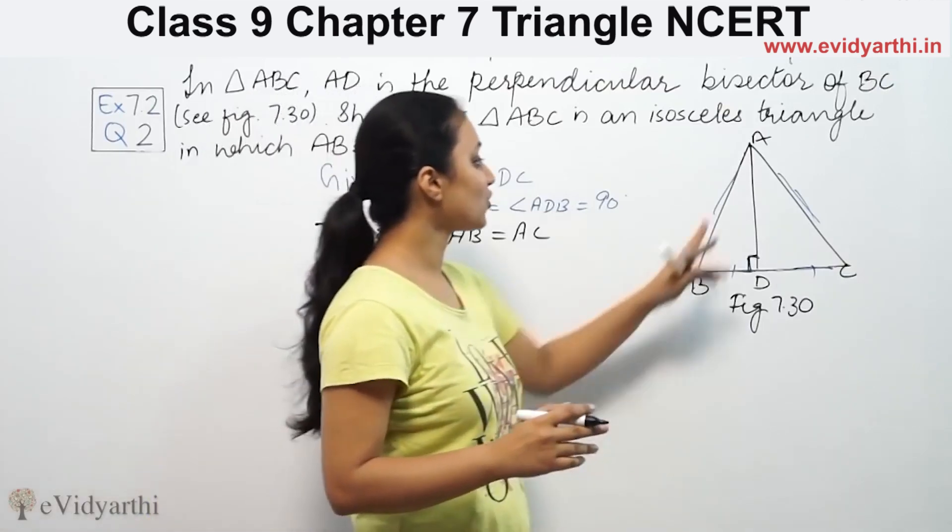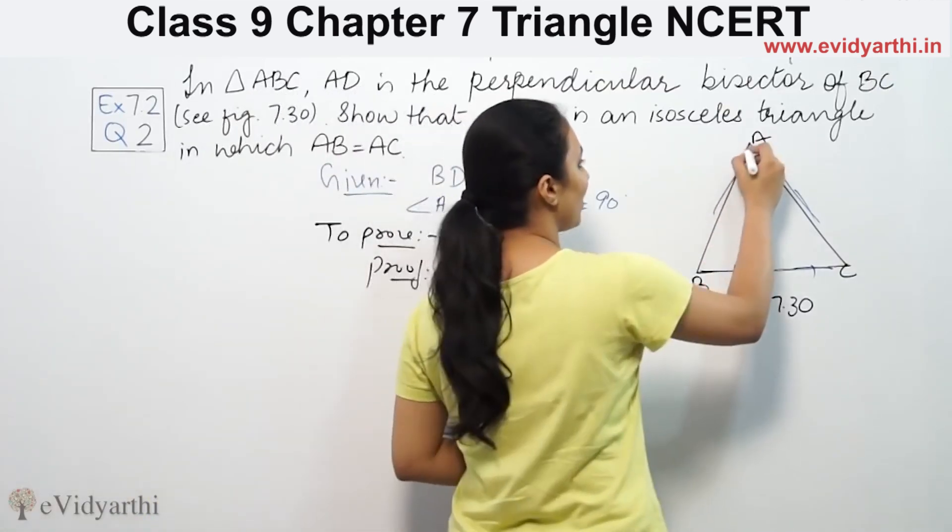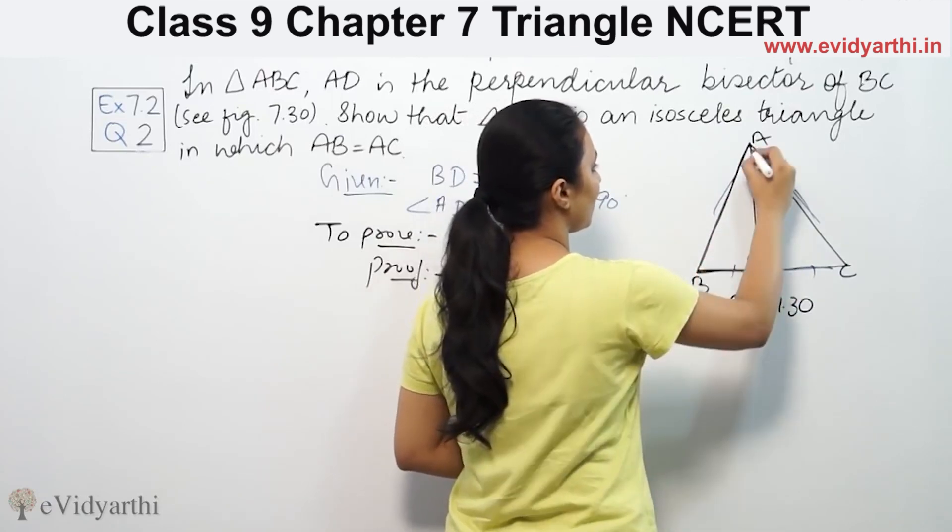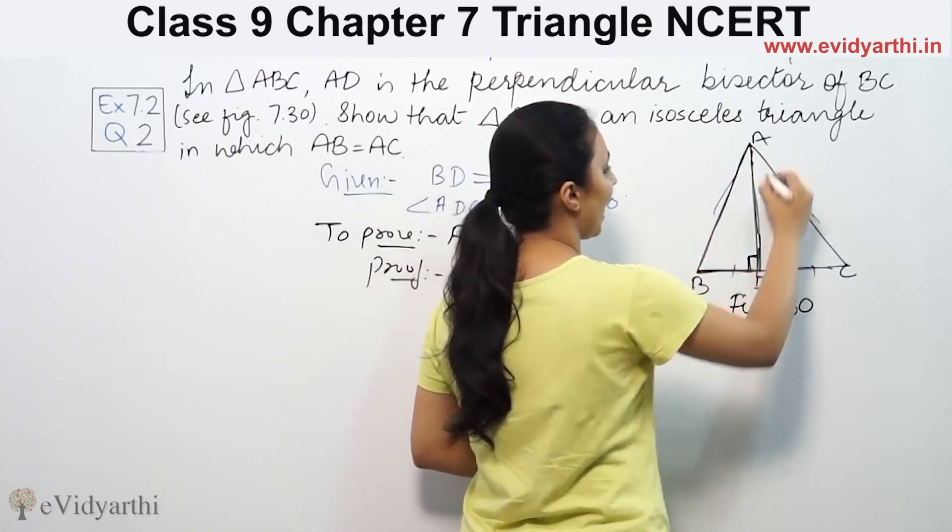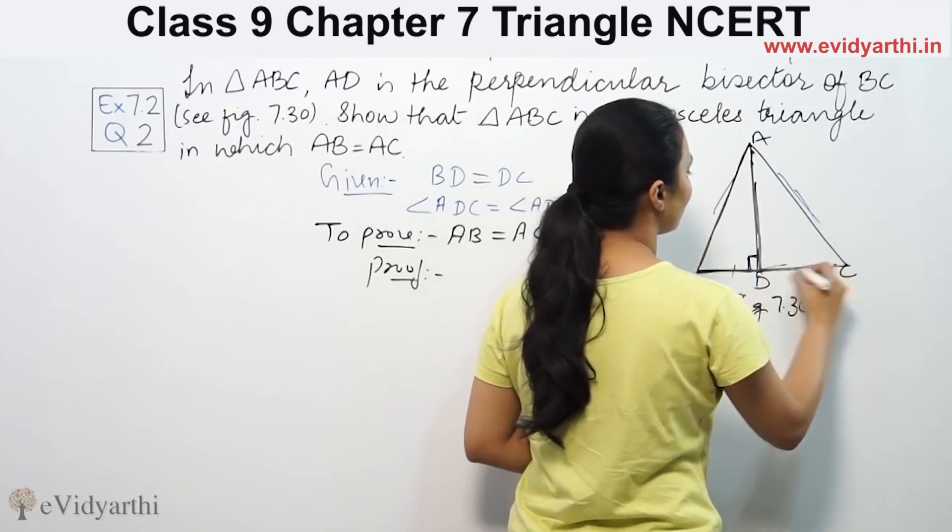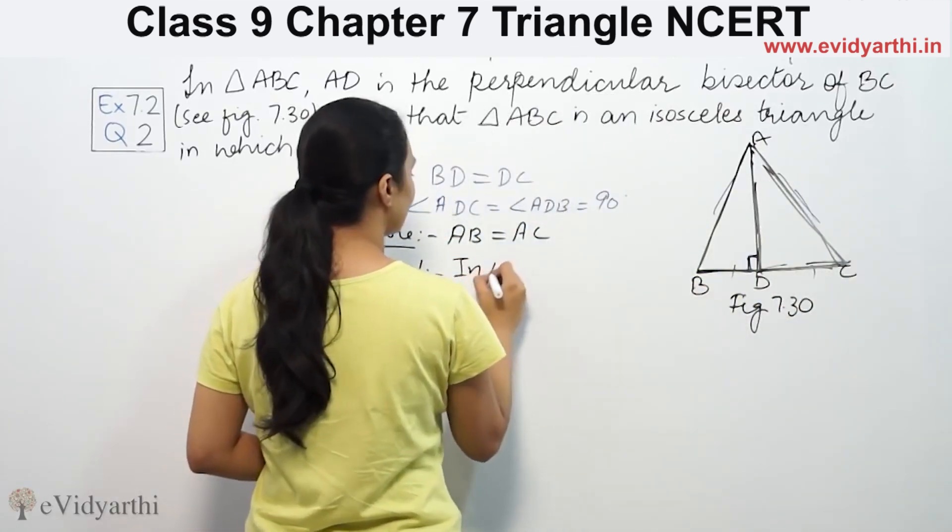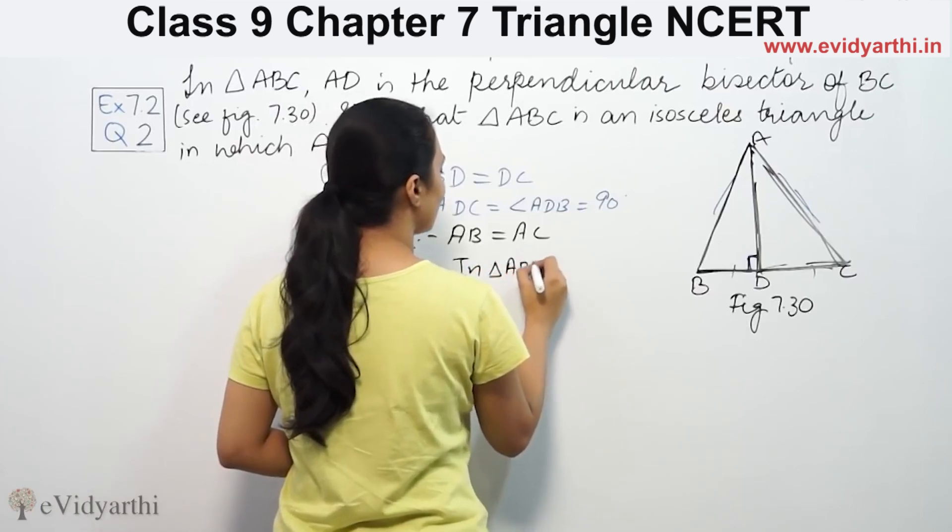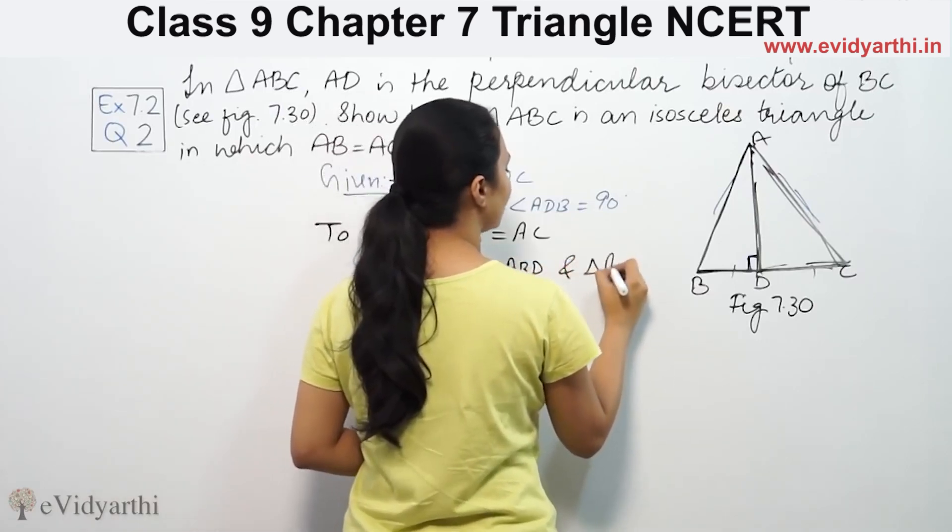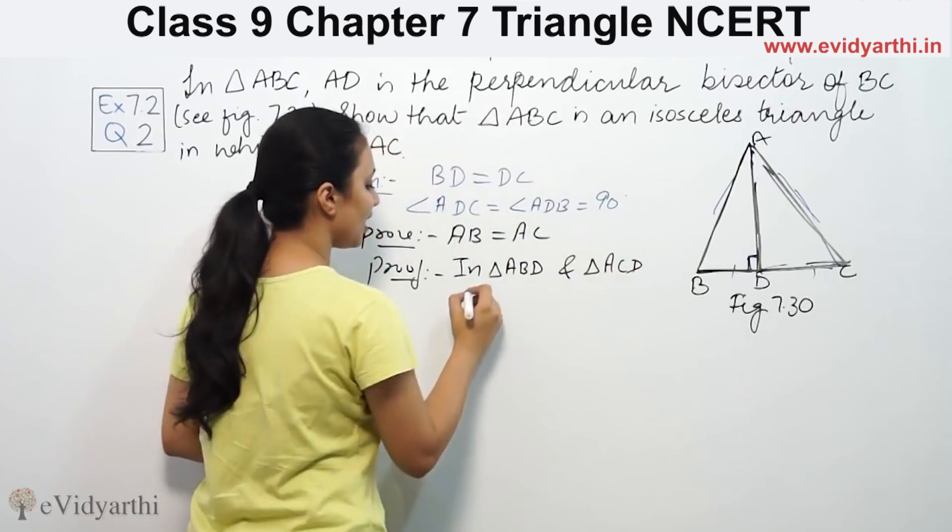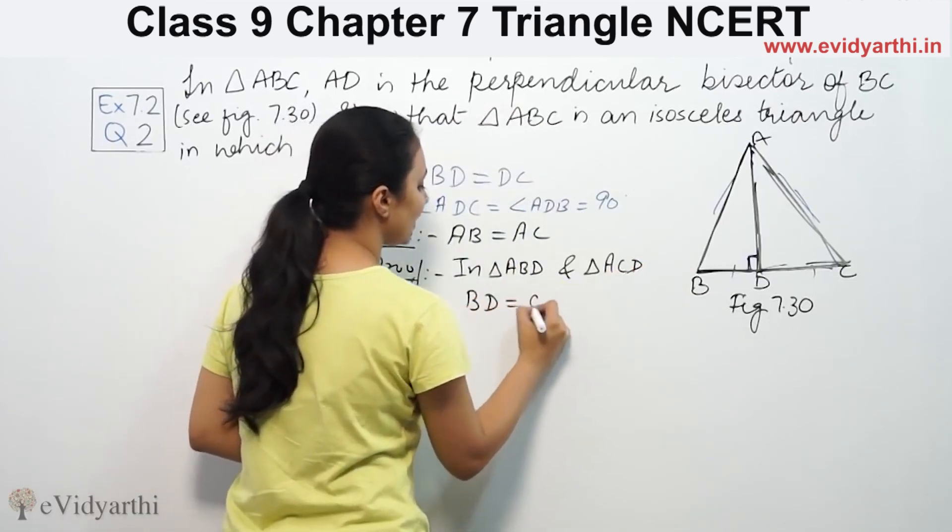We will prove these triangles. In triangle ABD, this is the triangle ABD, and triangle ACD is this triangle. So in triangle ABD and triangle ACD.